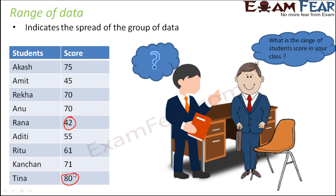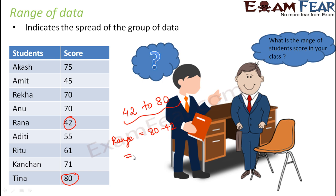The maximum value is 80, so the range of data lies between 42 and 80. To calculate the range: range equals 80 minus 42, which is the difference between the highest and lowest values. This comes out to be 38. That means the spread of the data is over 38 values — all scores lie within this range of 38 values, from 42 to 80. So 38 is called the range of the students' scores.